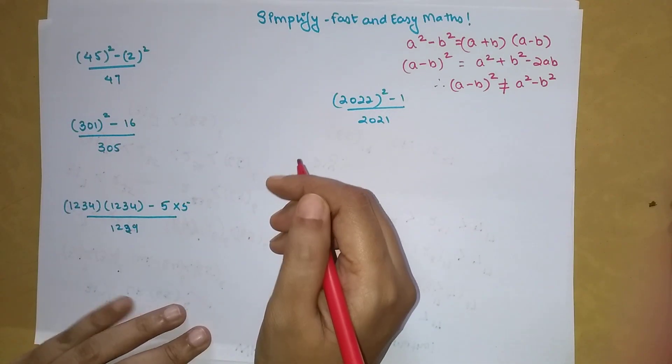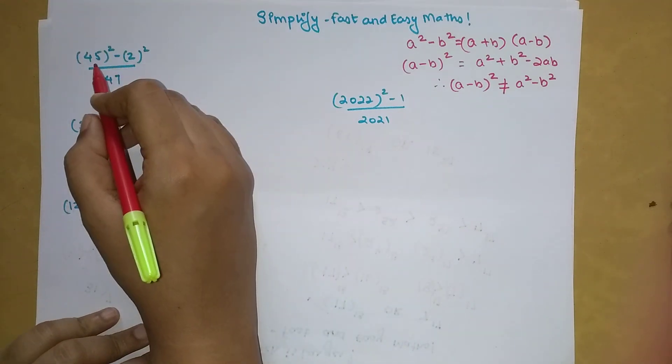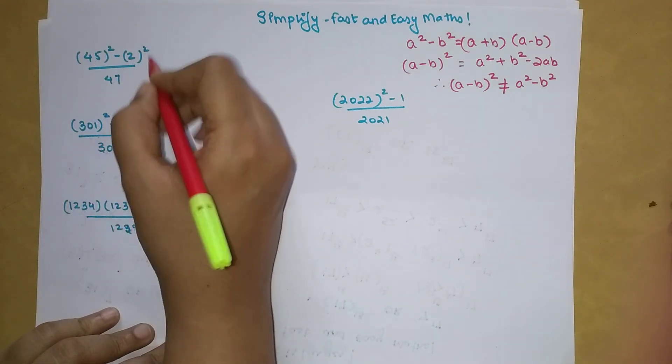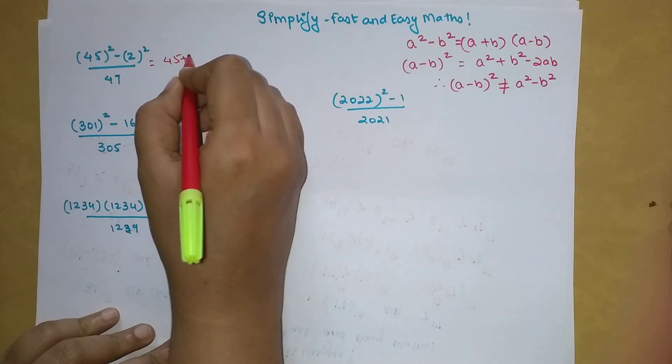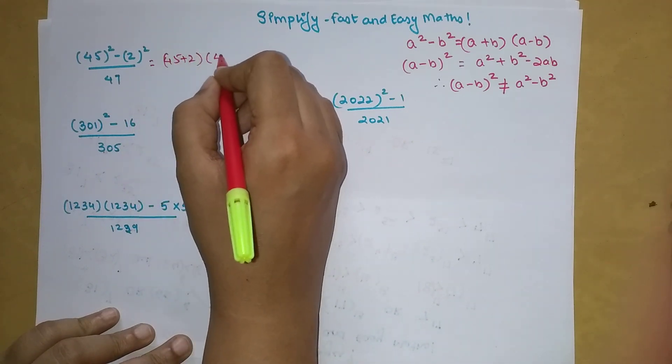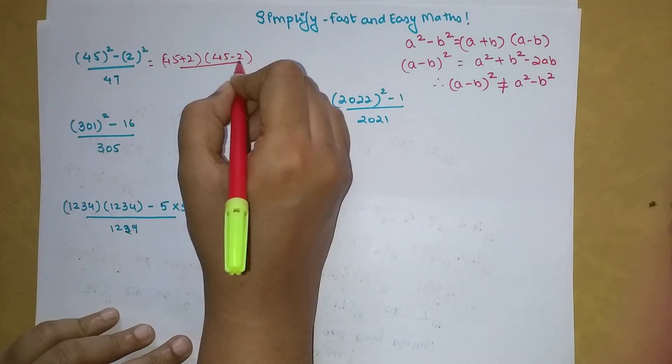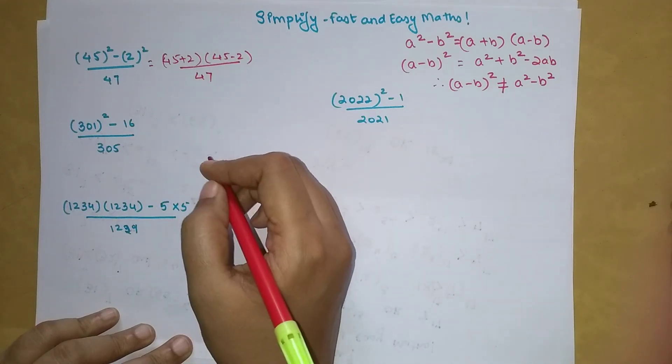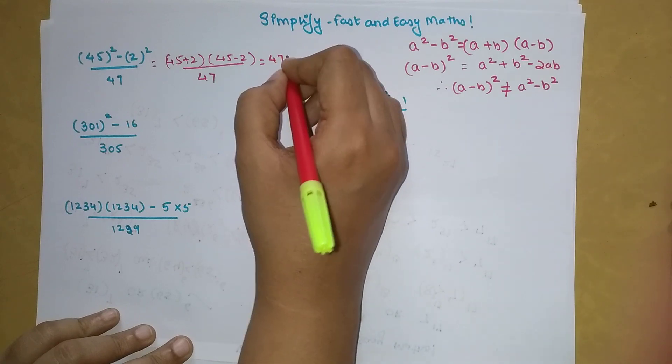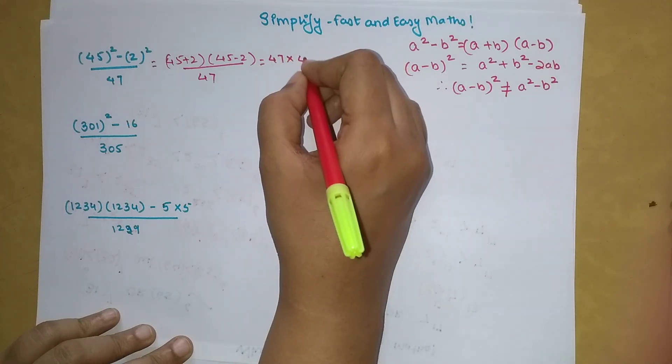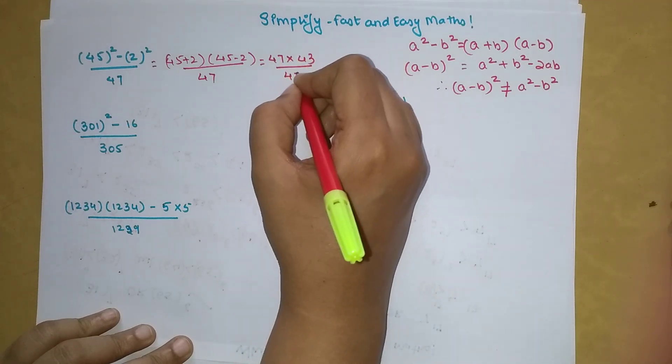So now coming to the questions. Here we have 45 square minus 2 square upon 47. Now using this expansion, we will write 45 plus 2 into 45 minus 2 upon 47. So we have 45 plus 2 which is 47, into 45 minus 2 which is 43, upon 47.